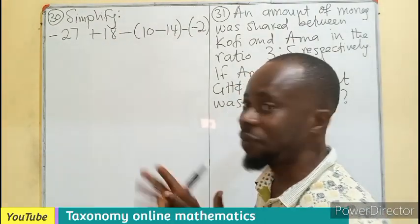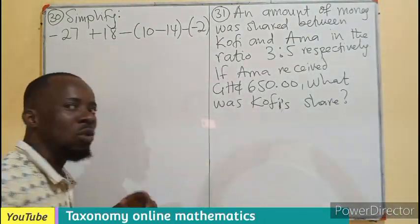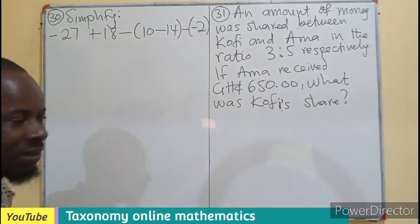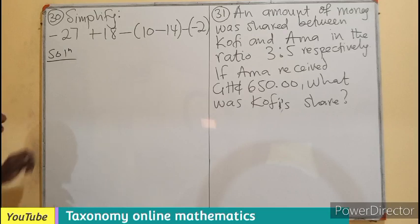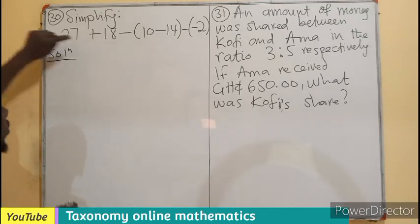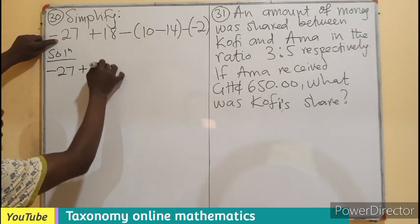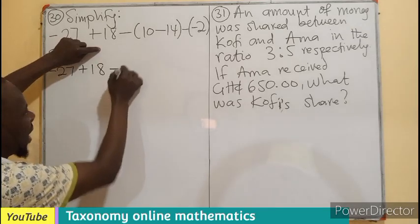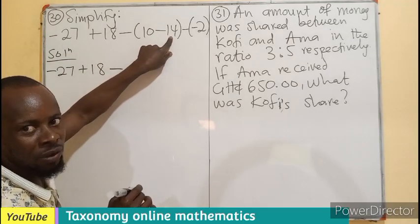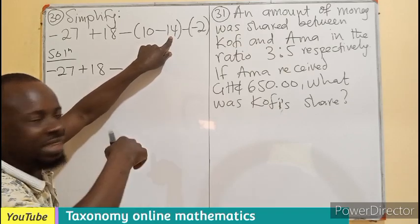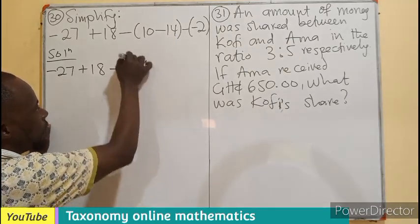We have to simplify these integers. We can also take into consideration the BODMAS approach, solving the one in the bracket first. So I have my negative 27 plus 18 minus, in this bracket, 10 minus 14. We know 14 is bigger than 10, so we get a negative 4.